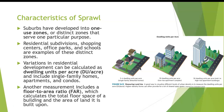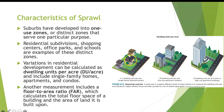One characteristic of sprawl is one-use zones — distinct zones that serve one particular purpose. It's not like highly populated cities or slums which have a mixed use of land. Here, one structure only serves one purpose. The dwelling units per acre is fairly low — a single-family detached home is only 3 to 4 dwelling units per acre. If we look at high-rise apartment buildings inside cities, the dwelling units per acre is much higher, around 30 dwelling units for the same size of area.